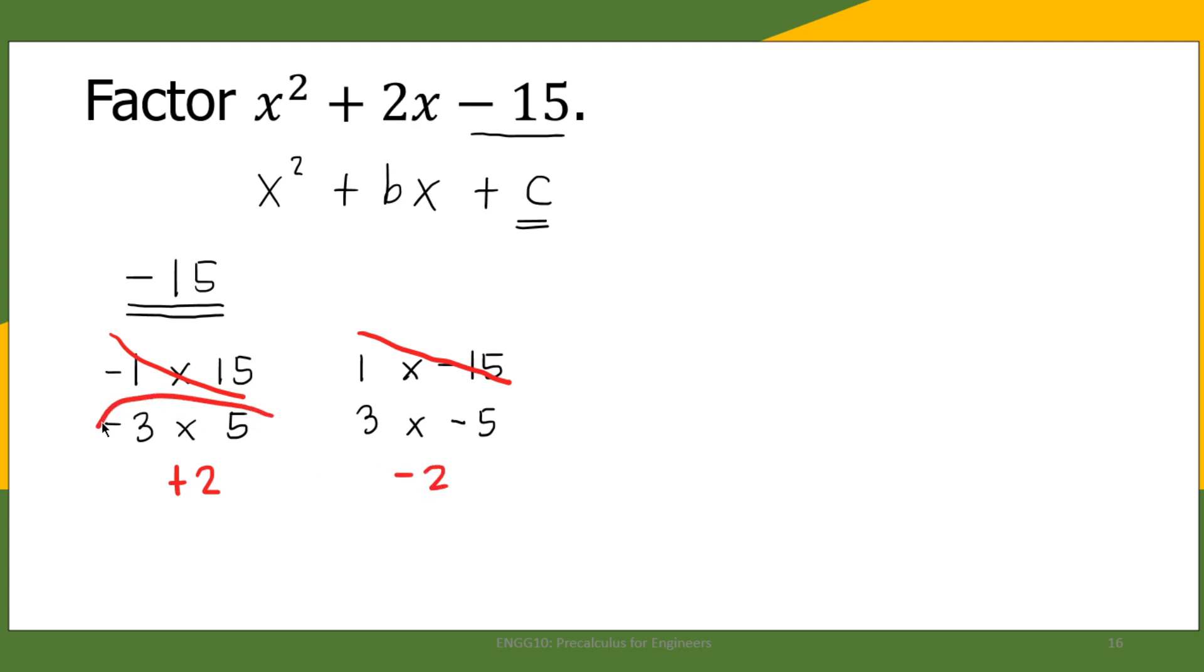This is now your p and q. Therefore, we can write the polynomial in factored form as (x - 3)(x + 5). This is now the factored form of the given trinomial.